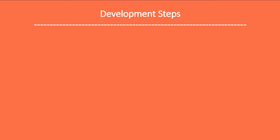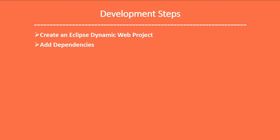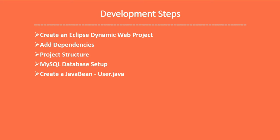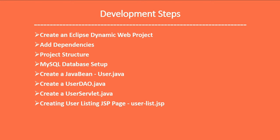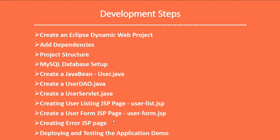Let's look at the development steps. First, we create an Eclipse Dynamic Web Project and add the required JAR dependencies. Next, we create a project structure, set up the database, and create a User JavaBean class. Then we create a UserDAO class with all the JDBC code, a UserServlet to handle web requests, a user-list JSP page, a user-form JSP page, an error JSP page, and finally deploy and test the application.